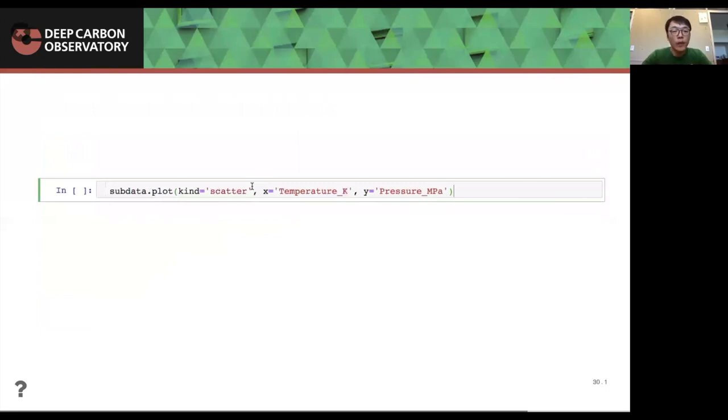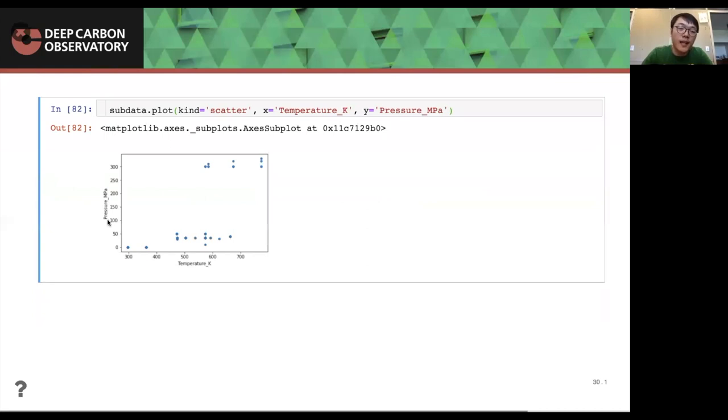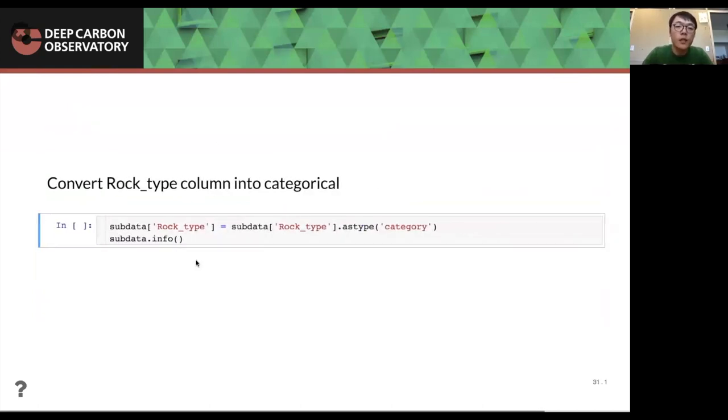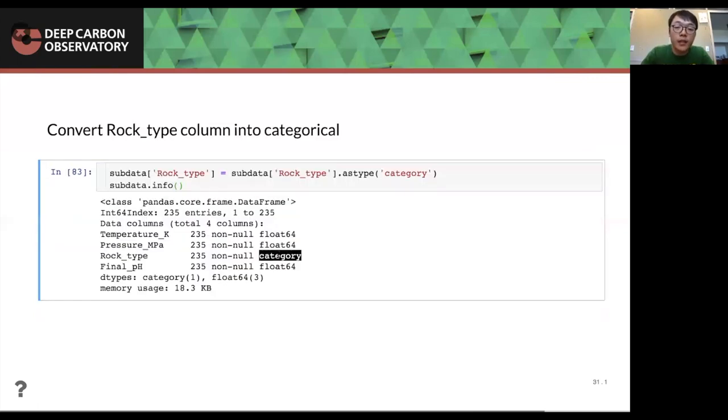After all this cleaning, we can then back to see the scatter plot, which gives us error previously. Now we can do the plot to see that we have a temperature and the pressure in this kind of plot, which usually higher temperature, higher pressure. And it's really good to see that after the cleaning, the dataset finally works. And also we can, we need to change the rock type column into category call, which we use as type function, the rock type, we will change it from the object type into category type. And then you see here is category.